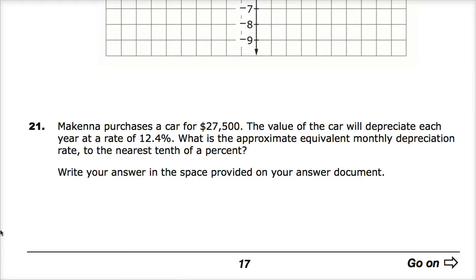McKenna purchases a car for $27,500. That's a very round number. The value of the car will depreciate, which means it decreases each year at a rate of 12.4%. What is the approximate equivalent monthly depreciation rate to the nearest tenth of a percent? And write your answers in the space provided on your answer document.